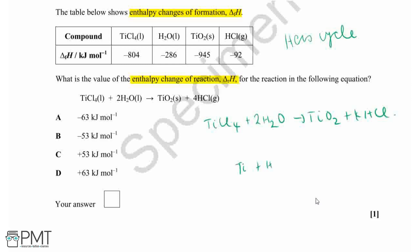This is just so that we can identify which way round our cycle is going to go so that we add and subtract things the correct way. We don't need to worry about balancing these elements because we're just using these to show the correct direction of our arrows.